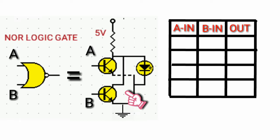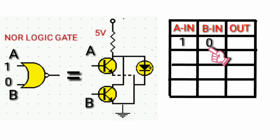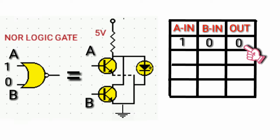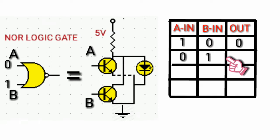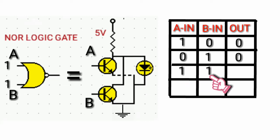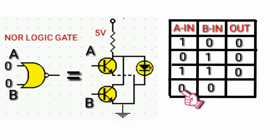When input A is logic high and input B is logic low, the output will be logic low. When input A is logic low and input B is logic high, the output is still logic low. When both input A and B are logic high, the output will be logic low. But when both input A and B are logic low, the output will be logic high.